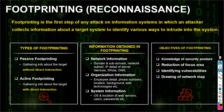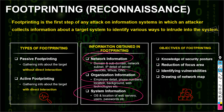In footprinting we collect many different types of information. For example, we collect network information such as domains and IP addresses, organization information such as number of employees, phone numbers, background, and technologies they use. We also collect system information — for example, which operating systems employees use, such as Android or Windows — so we can plan the attack accordingly.